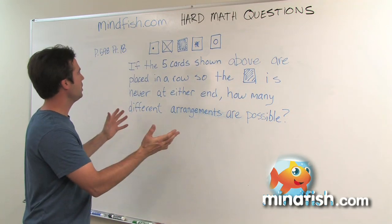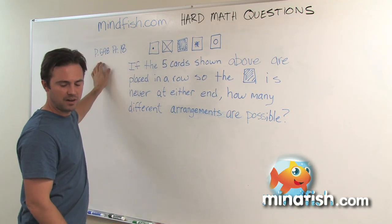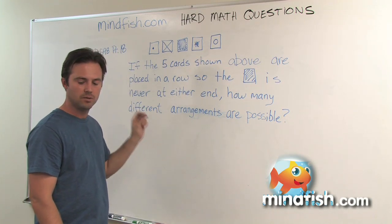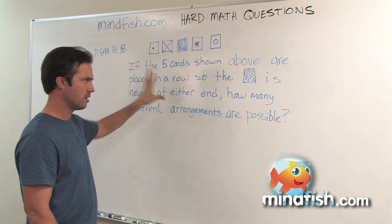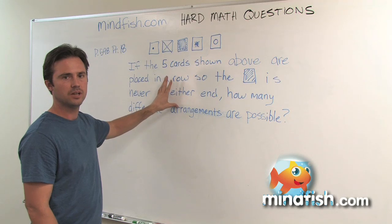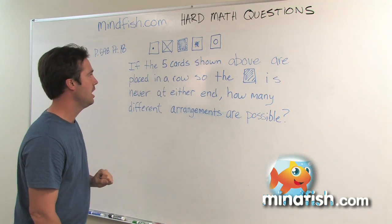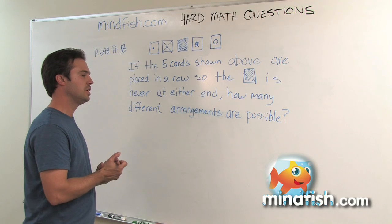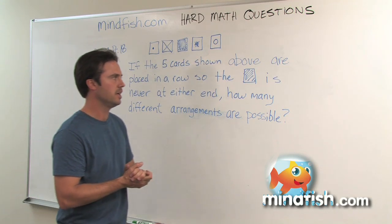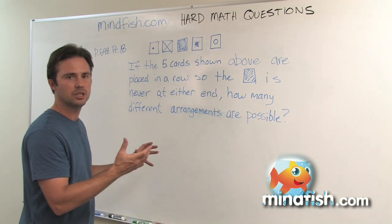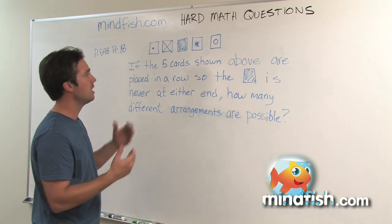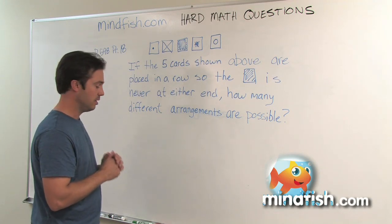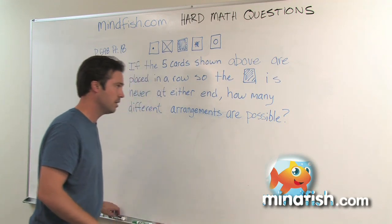This question is problem 18 on page 598. It's the last question on the math section with the student-generated responses, so you have to come up with your own answer — not pick one for multiple choice. In our categorization, I would put this under probability. It's essentially a permutation question, but it's got a little bit of a trick to it, and that's why it's a hard question.